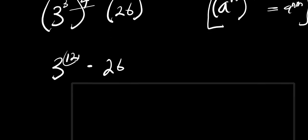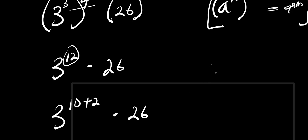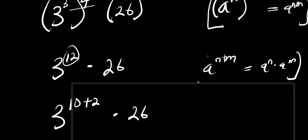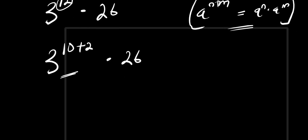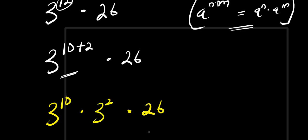So what is the value of 3 power 12? We can express 3 power 12 as 3 to the power of 10 plus 2, times 26. Now if you have a power n plus n, this equals a power n times a power n. Applying this identity right here, what we are going to have will be 3 power 10 times 3 power 2 times 26.